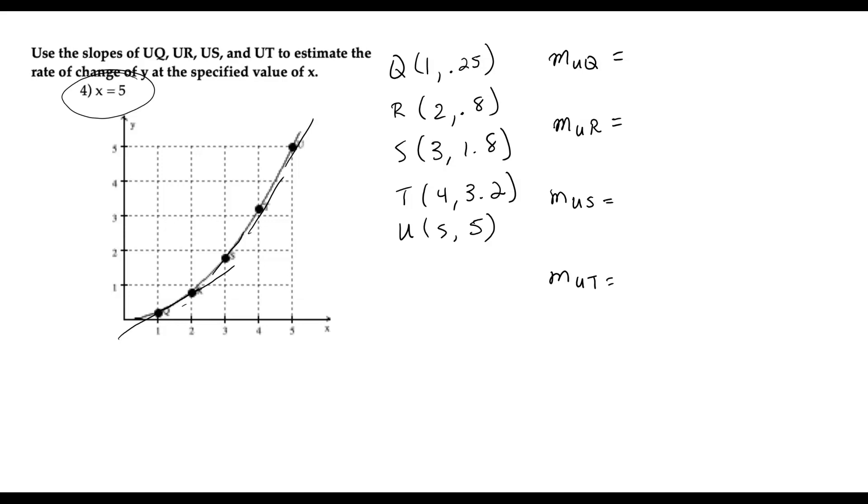I've already written out the points from what I believe they are based on my reading of the graph. So here's 1 and a quarter, 2 and about 0.8, 3 and about maybe 1.8, and about maybe 3.2, and then 5, 5. So let's go ahead and use these values to find some slopes.